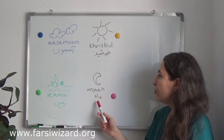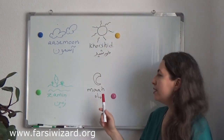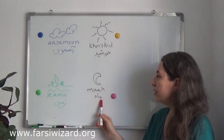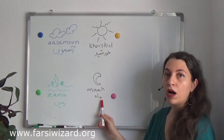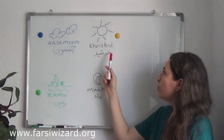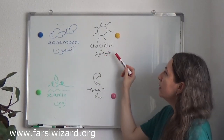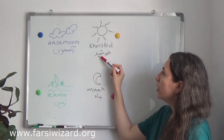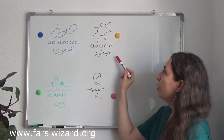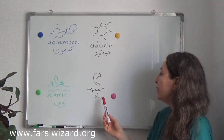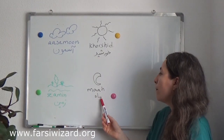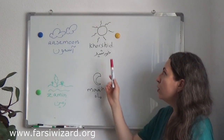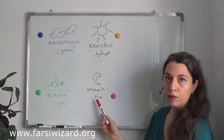And then we get to the moon, which is 'mah.' Mah — one syllable. If you look at the Farsi words here, for khorshid you have kh, u, re, sh, i, and de — khorshid. And for mah you have m, a, he — mah. Khorshid. Mah.